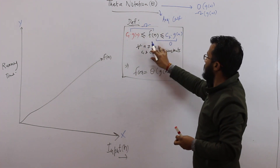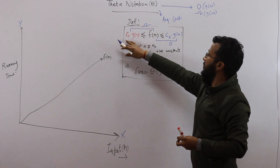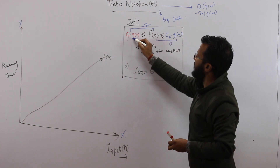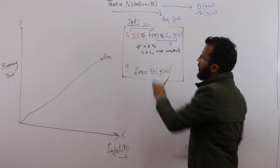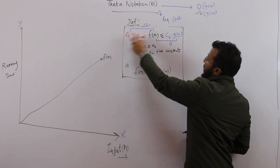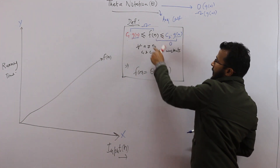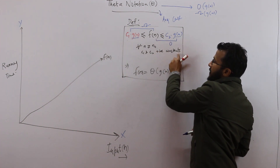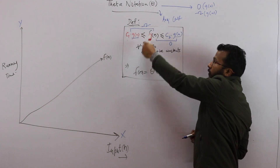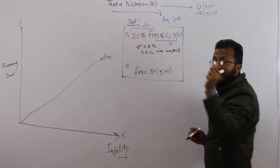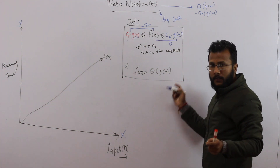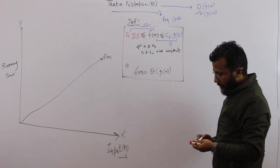This must hold for all values of n greater than or equal to n₀, and for some positive constants c₁ and c₂. Note that g(n) is the same function in both inequalities — only the constants c₁ and c₂ differ. If this inequality holds for all n ≥ n₀, then you can claim that f(n) is theta of g(n).